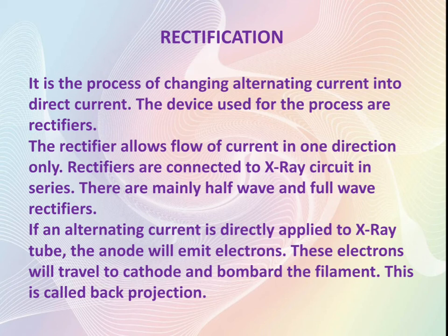The rectification process can be of two types. The first one is half wave rectification. In half wave rectification we convert only the positive half cycle of the alternating current into direct current. Whereas in full wave rectification we convert both positive and negative half cycles of the alternating current into direct current.